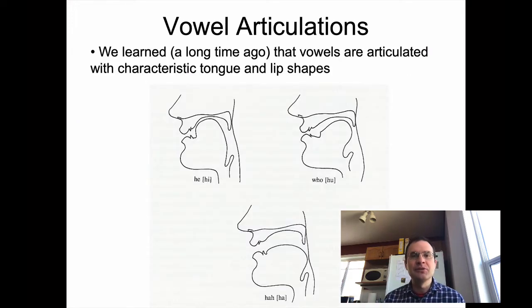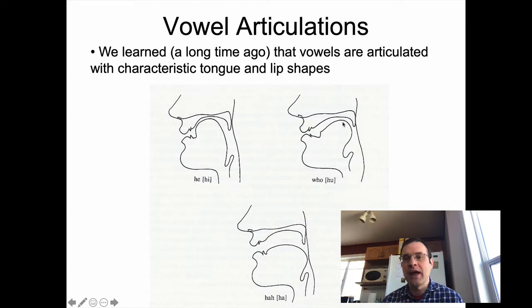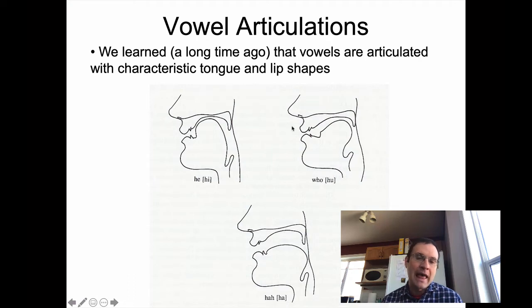I want to relate this to what we learned about vowels, which is that they're articulated with characteristic tongue and lip shapes. We talked about this as if vowels could be described by where the highest arch of the tongue was. For E, we talk about the high front position of the tongue — moved forward and close to the palate. With OO, we're also pretty high so the tongue is close to the palate, but in a backer position. And then for AH, you keep it back but lower it — it's a low back vowel, nowhere near the palate but closer to the pharynx. For OO, you also tend to round the lips.